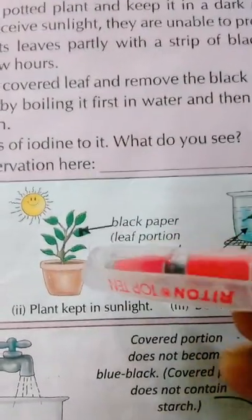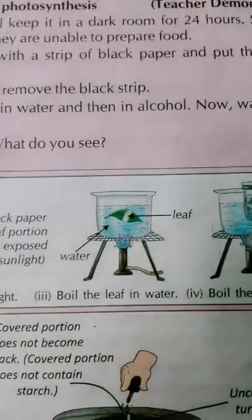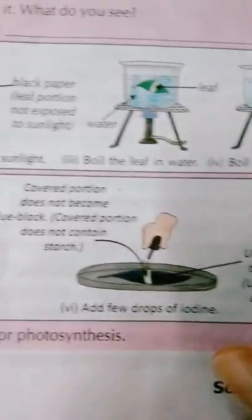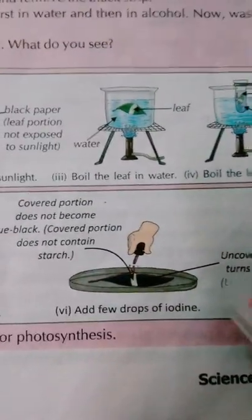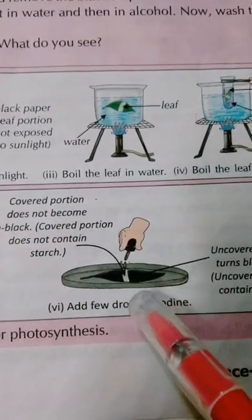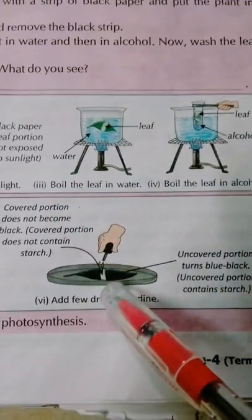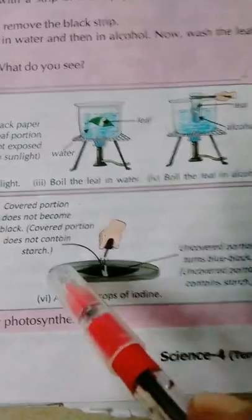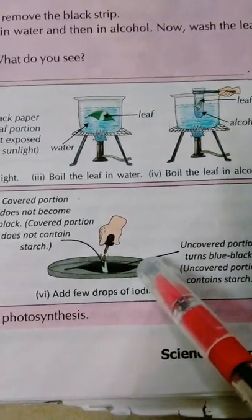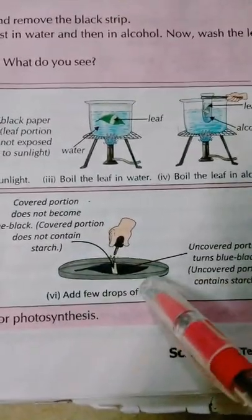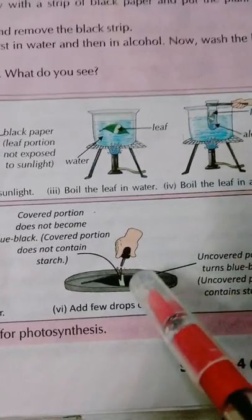Then we remove the leaf, boil it in water, and then boil it in alcohol. After that, we wash the leaf in cold water and use iodine solution on it. The portion covered by the black strip — which was not exposed to sunlight — does not turn blue-black. The uncovered portion, which was exposed to sunlight, turns blue-black, showing starch has been made there.